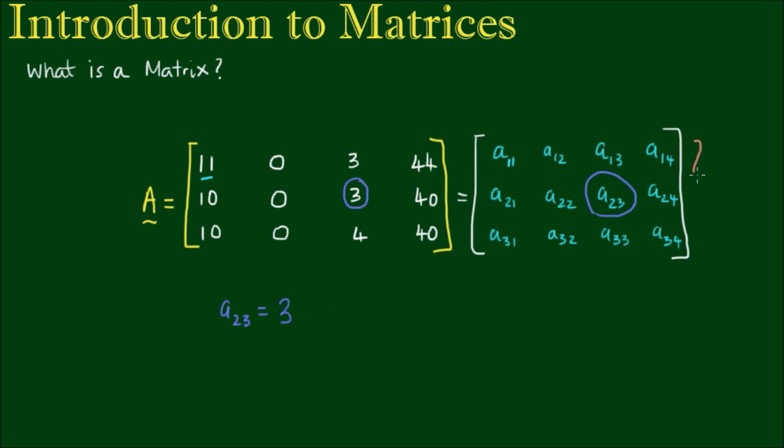This matrix here has 3 rows and 4 columns. This is what we refer to as a matrix of the order 3 by 4. We say that A is a 3 by 4 matrix. And again importantly, note that the elements always have the row number as the first subscript and the column number as the second subscript.